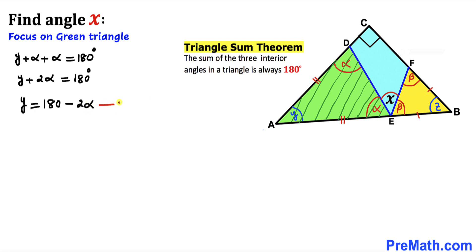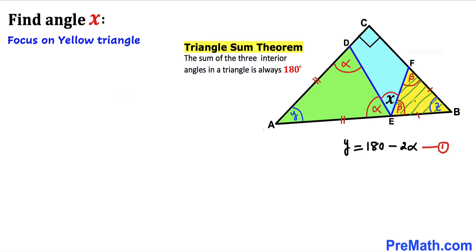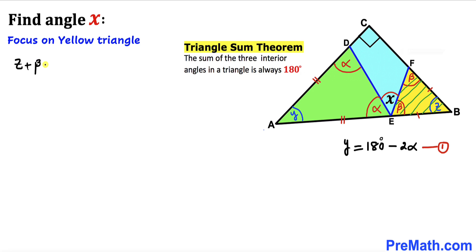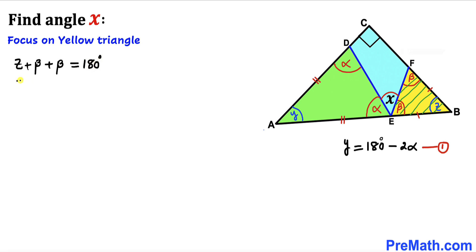Now let's focus on the yellow triangle again and recall the triangle sum theorem. The sum of all three angles in this yellow triangle equals 180 degrees. So Z plus beta plus beta equals 180 degrees. Combining like terms: Z plus 2β equals 180 degrees, therefore Z equals 180 minus 2β. Let's call this Equation 2.